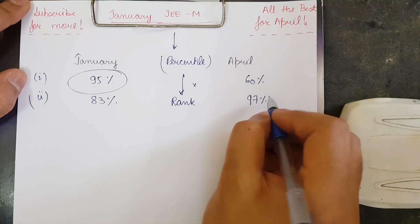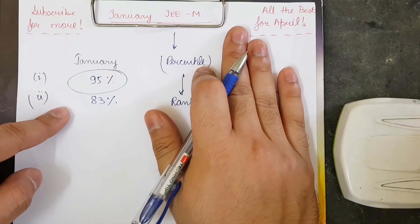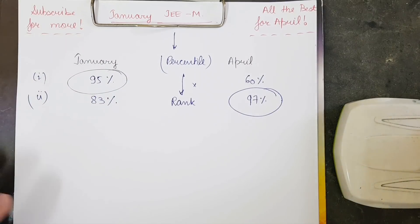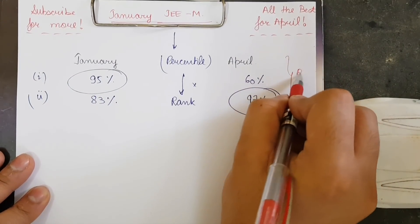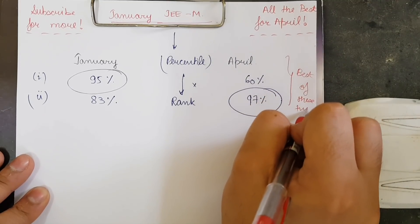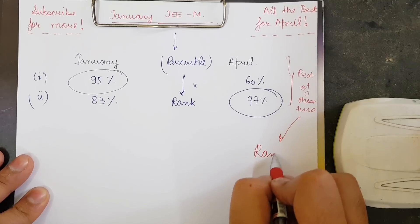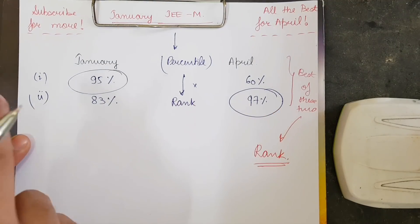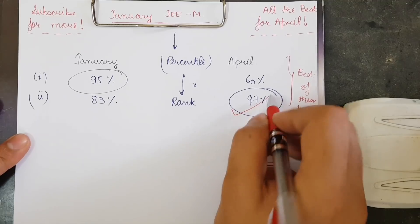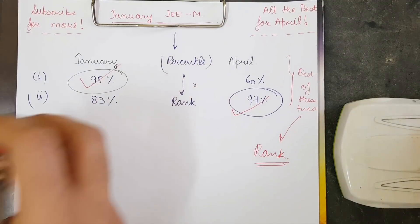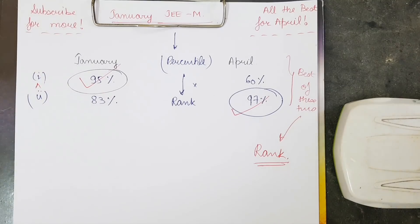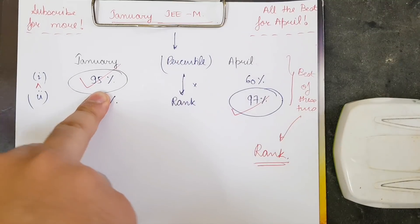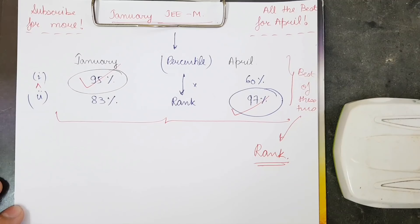But you need to understand that the NTA, which is conducting the exam, is going to take the best of the 2 sessions. In April, student 2 got 97 percentile. So 97 is greater than 60 and 95 is greater than 83. The NTA takes the best of these two for rank preparation. Finally, the rank list shows student 2 at 97 percentile and student 1 at 95 percentile — so student 2 performed better. That is why we cannot calculate rank based on just one examination.